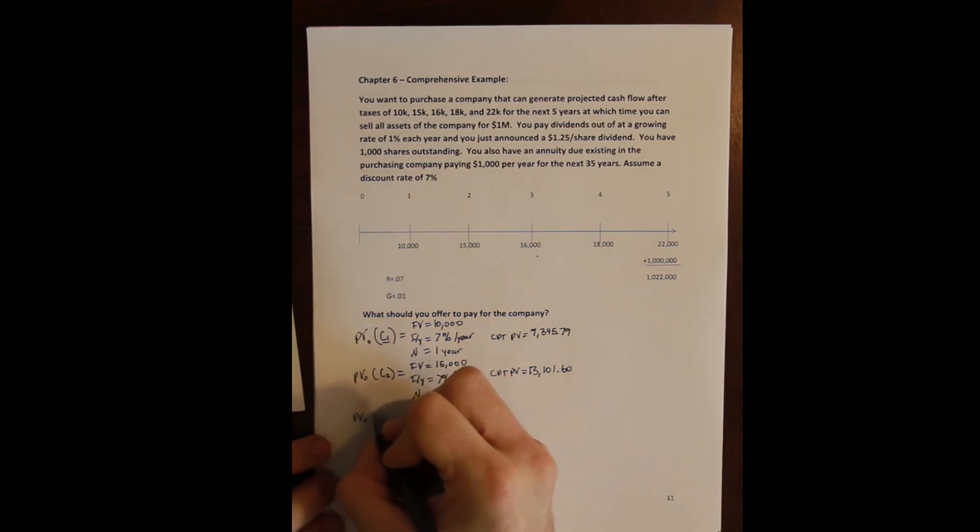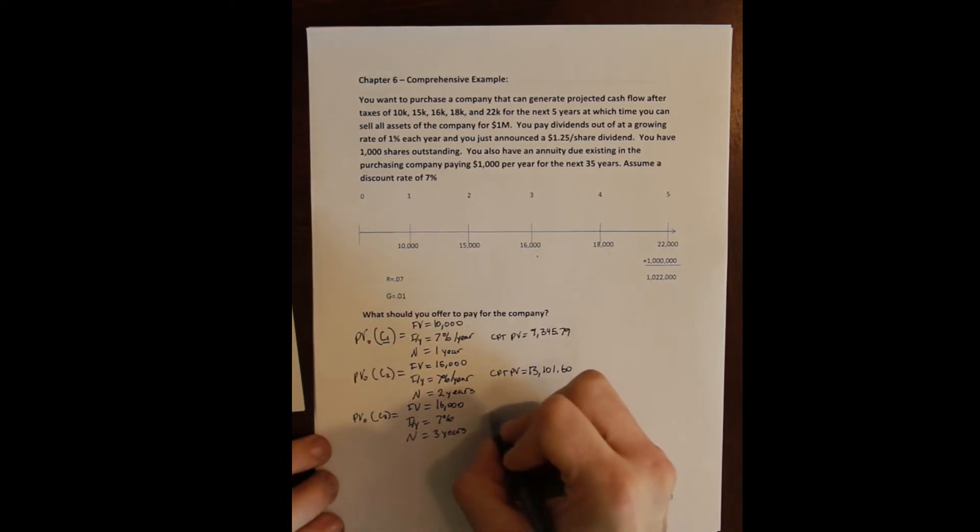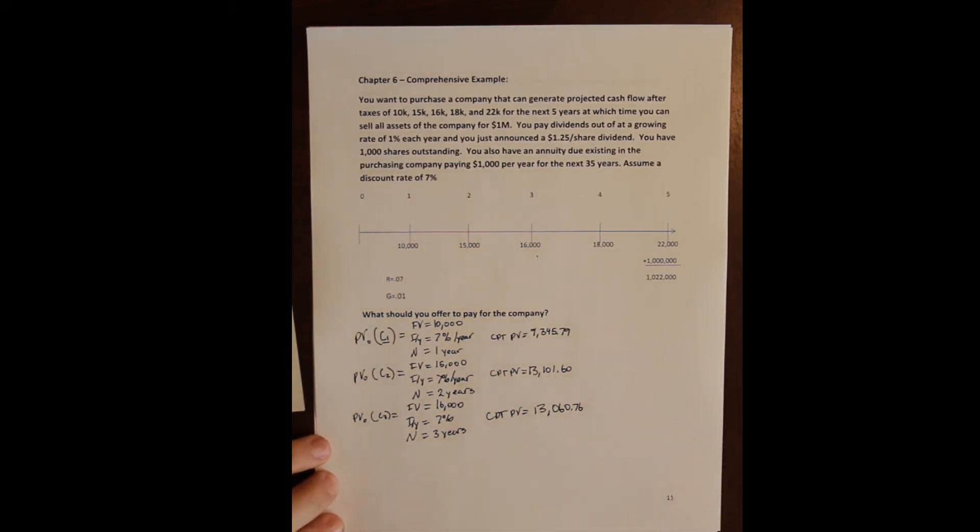Present value of the third cash flow, where the third cash flow has a future value of $16,000. A discount rate still 7%. This cash flow occurs three years in the future. We compute the present value of this cash flow and get $13,060.76.